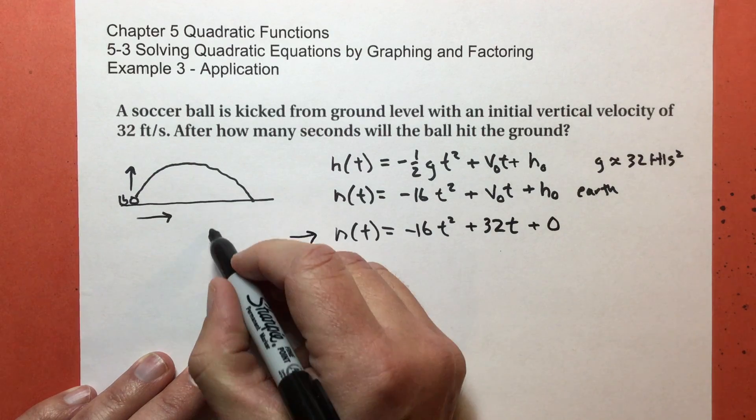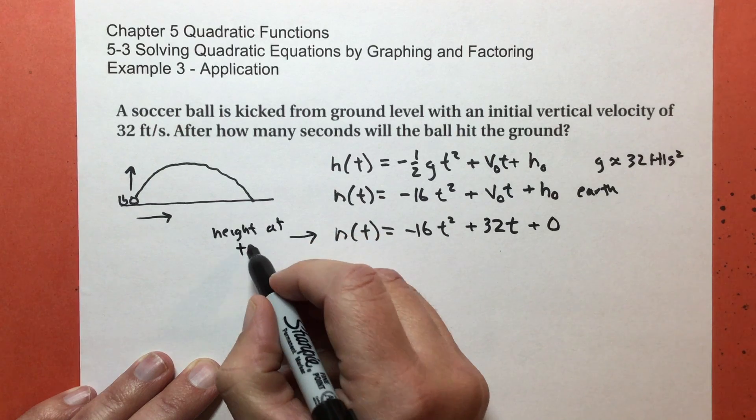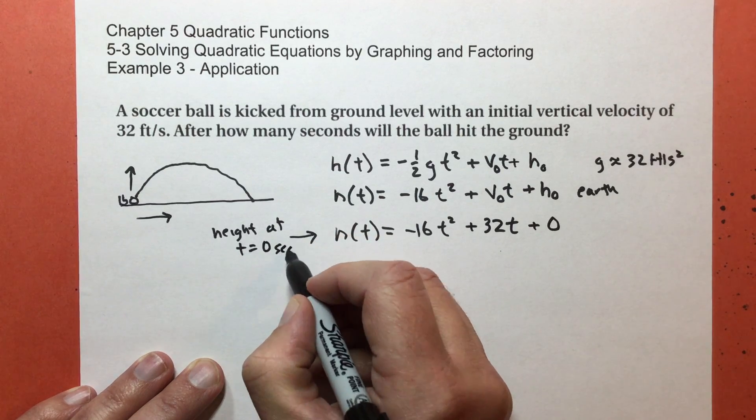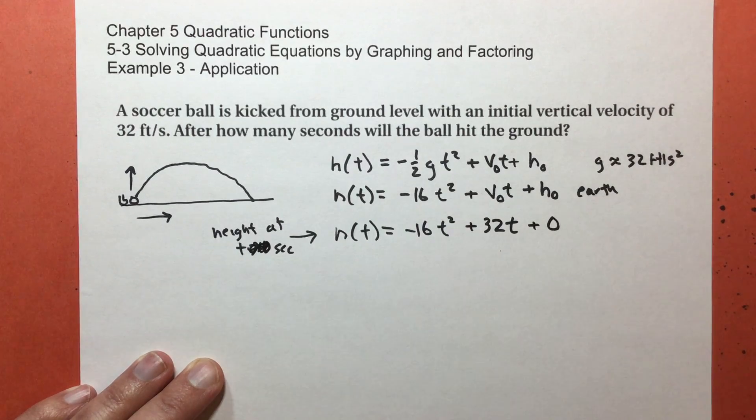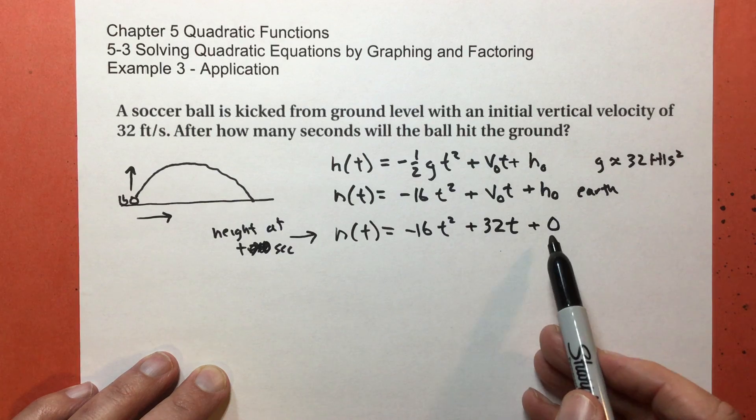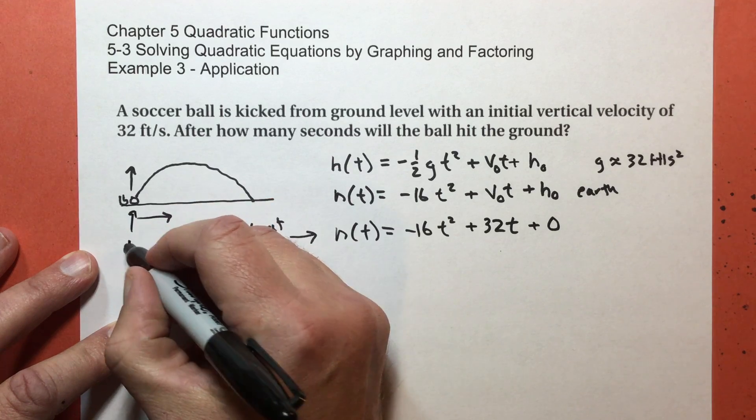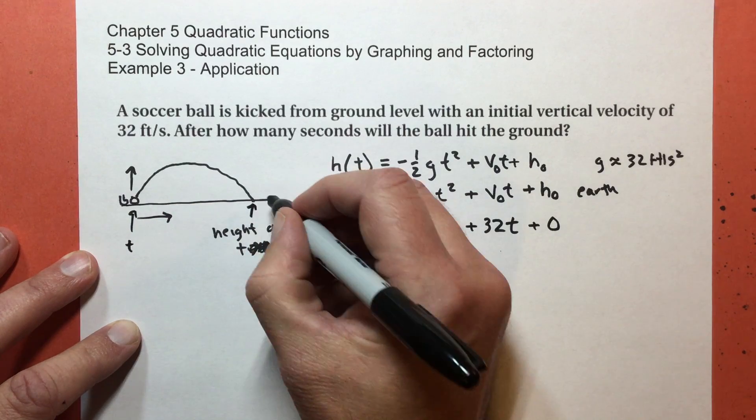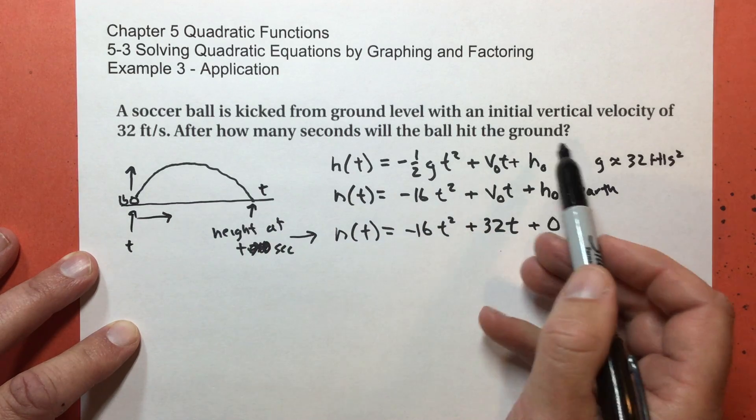Now, this is the height of the soccer ball at time t seconds. So one second, two seconds, three seconds, however long the ball is in the air until it comes back down. So what I want to find out is what's the t here and what's the t here when it comes back down to the ground? How many seconds will the ball hit the ground? So this one's obvious. At zero seconds, the ball is going to have a height of zero. But let's find out what the other one is.